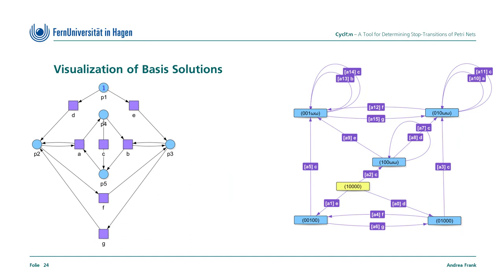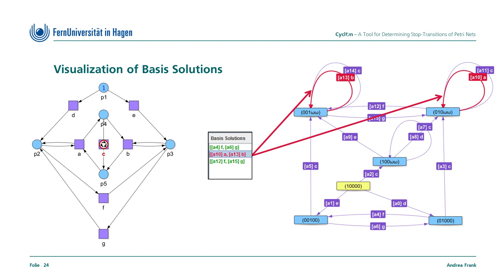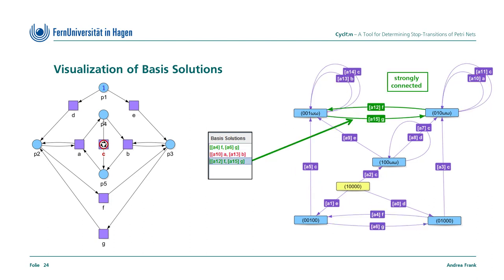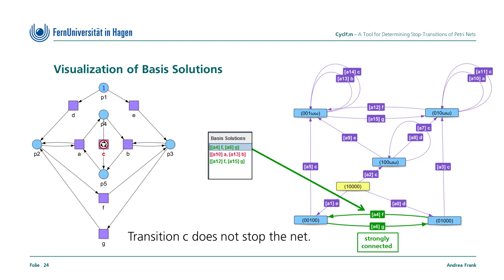We extend the example by the transitions F and G, which act like a swing. With the new transitions, the outer token can be moved from P2 to P3 and vice versa. This means that now A and B can occur alternatingly, but not without occurrences of F and G. Cyclone computes three basis solutions. In addition to the basis solution from above, Cyclone computes two further basis solutions, each of which strongly connected. Consequently, C does not stop the net.